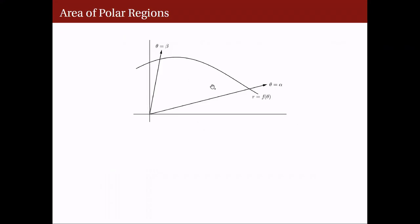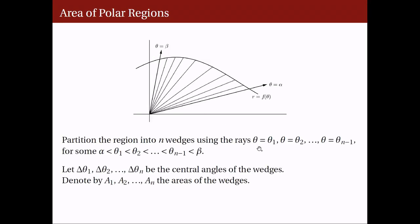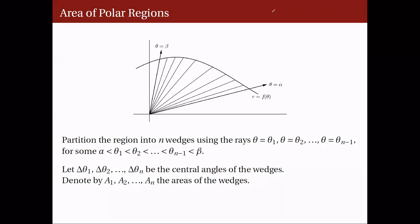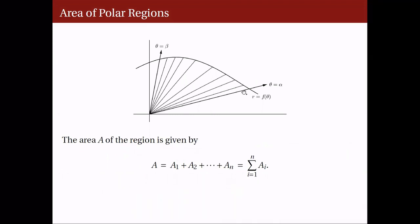Notice that this polar region resembles a fan that can be partitioned into n wedges. We can do that by using the rays theta equals theta sub 1, theta equals theta sub 2, and so on until theta equals theta sub n minus 1, for values of theta between alpha and beta. By partitioning this polar region into n wedges, we now have n central angles, denoted by delta theta sub i for the i-th wedge, and n areas of the wedge, which we call a sub 1, a sub 2, up to a sub n.